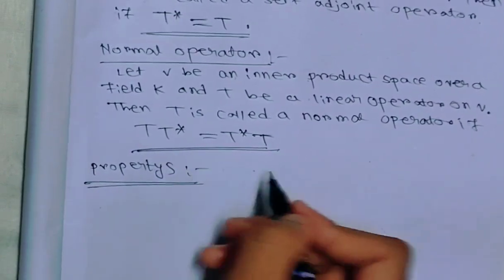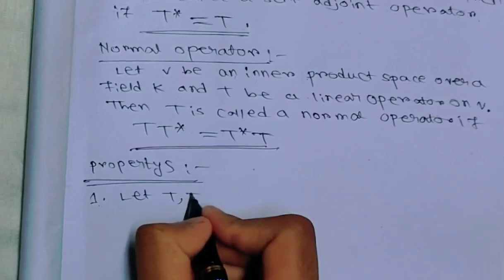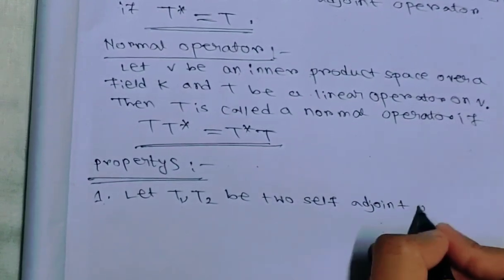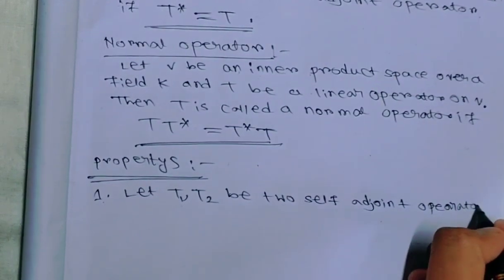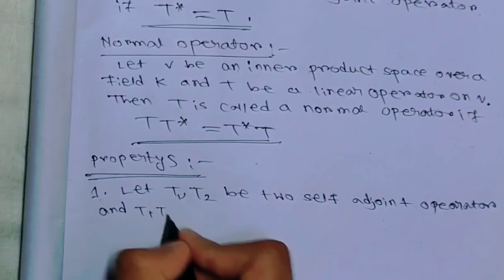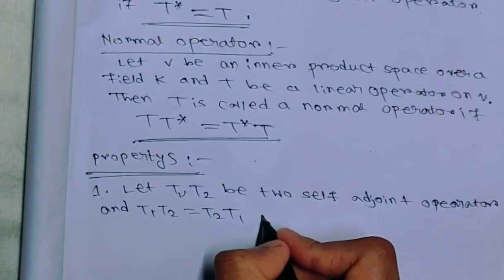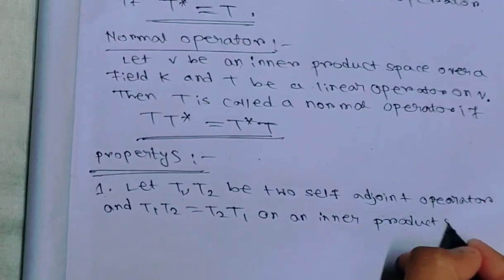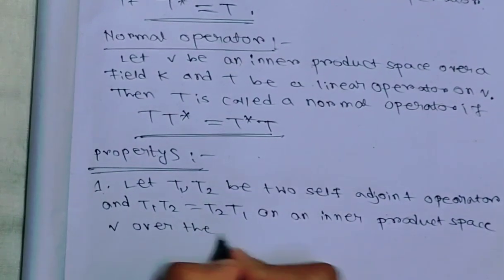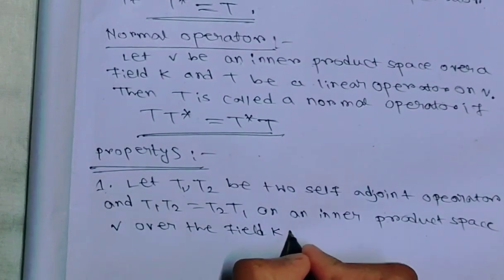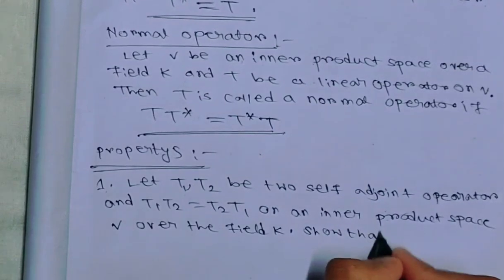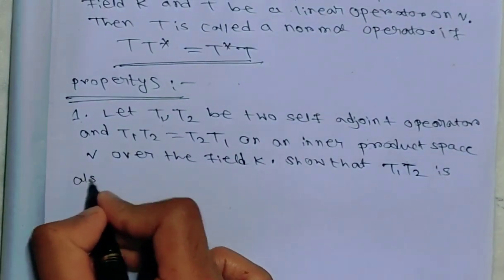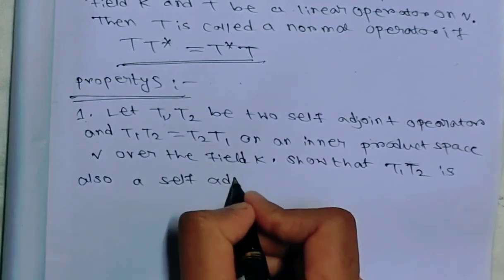Now, properties of normal operators. First of all, let T1 and T2 be two self-adjoint operators on an inner product space V over the field K, and suppose T1 T2 equals T2 T1. Now we have to show that T1 T2 is also a self-adjoint operator.